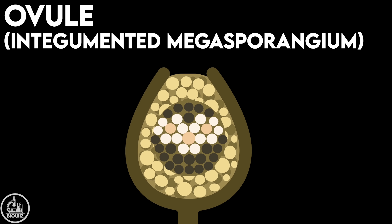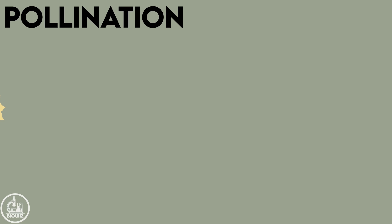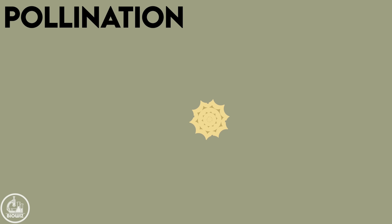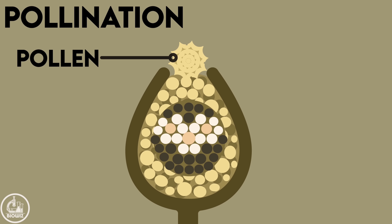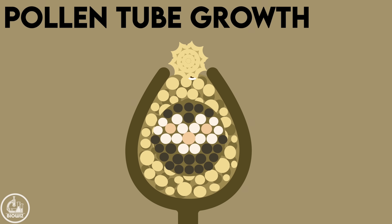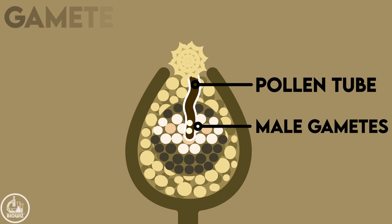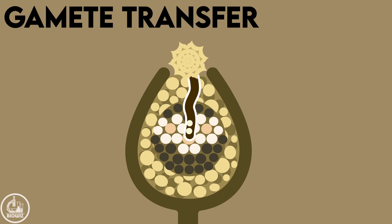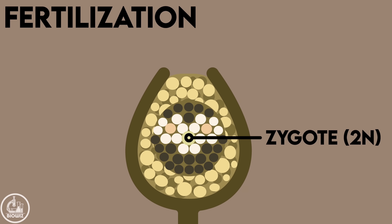The pollen formed by the male cone reaches the female cone by wind pollination, as gymnosperms do not produce bright colors or fragrance to attract pollinators. The pollen lands on the micropyle of the ovule and starts to germinate. As a result, a pollen tube containing male gametes starts to grow out from the pollen. The pollen tube grows towards the archegonium and releases the male gamete near the female gamete.